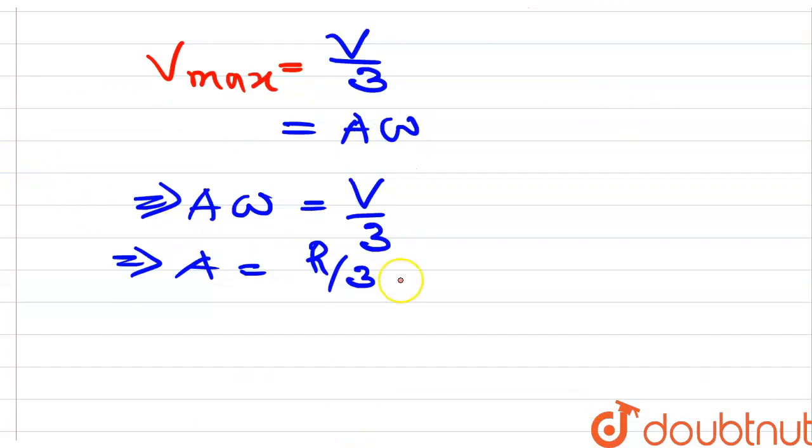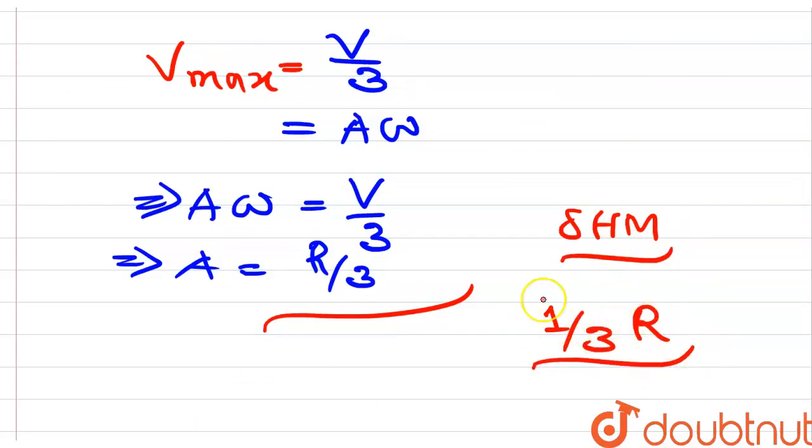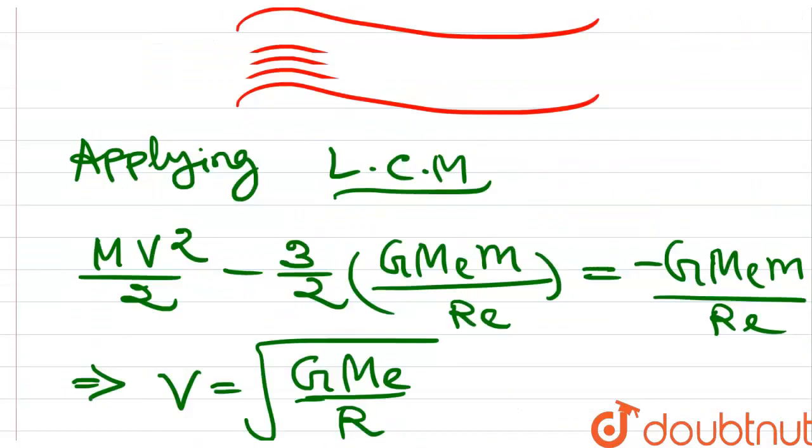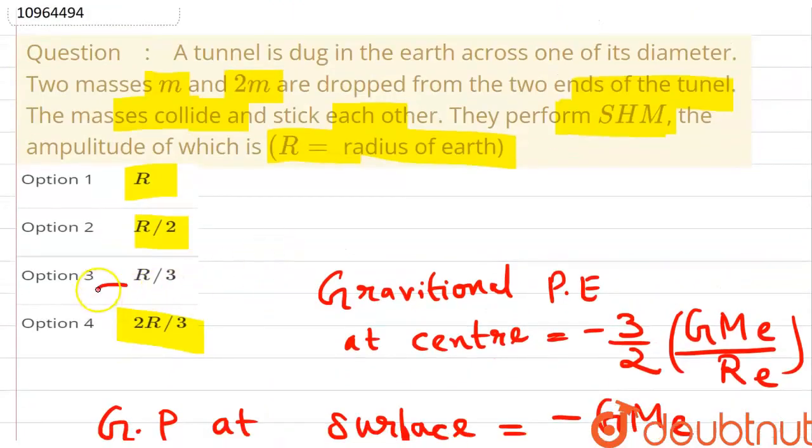So the amplitude of the SHM will be one-third the radius of the earth. So option 3 will be the correct answer.